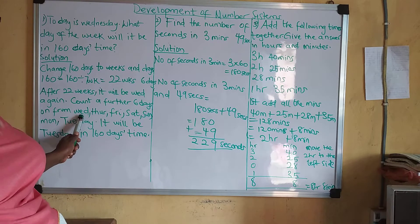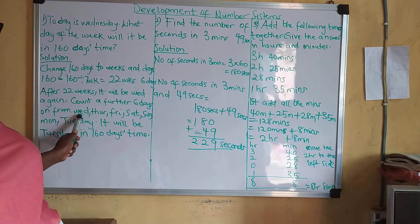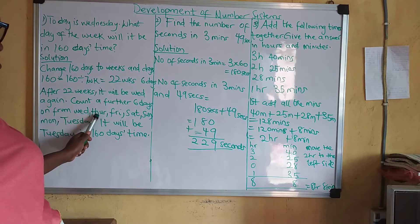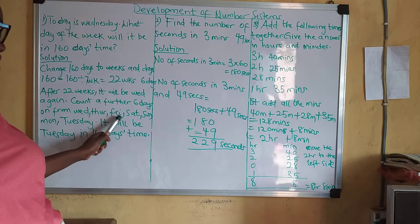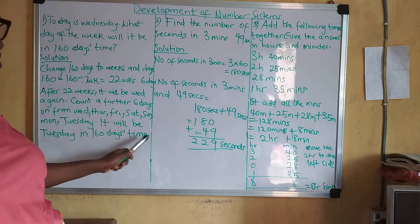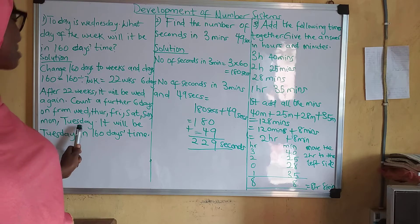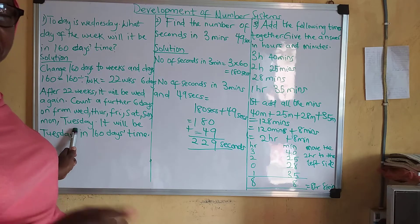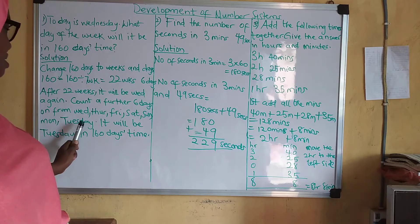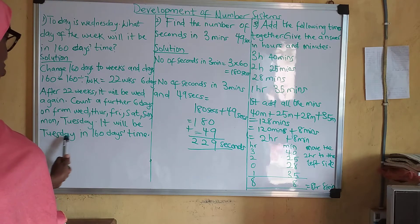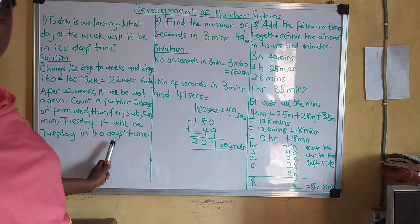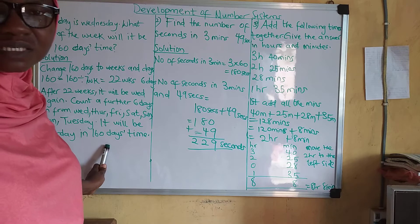So count with me: Wednesday, Thursday, Friday, Saturday, Sunday, Monday, and Tuesday. Meaning that it will be Tuesday in 160 days.